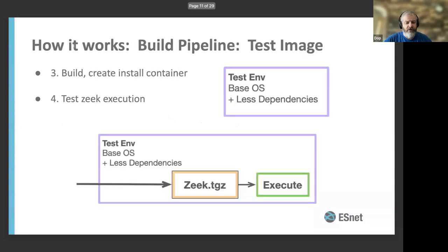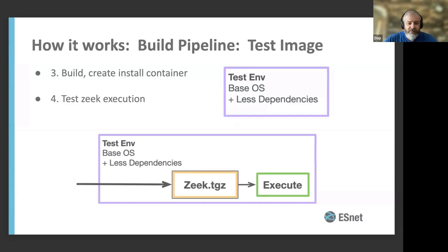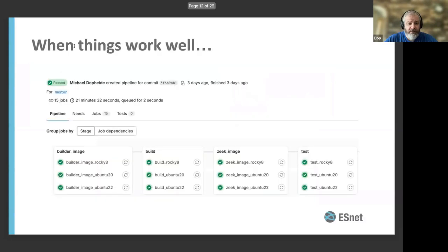We have this artifact now — we've built it, but we need to actually test it. We start again with the base OS, build a new container, and install only the dependencies necessary for Zeek to actually run. That simulates the hardware install environment where we want the Zeek binaries to run. Then as the last step we simply try to execute it — did it actually work? Does it run without crashing? That gives us our full CI pipeline.